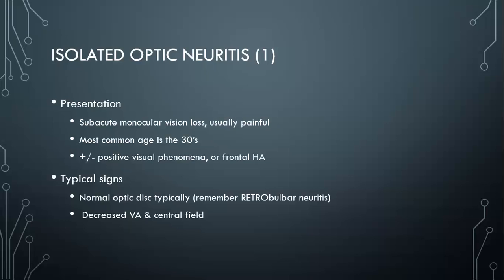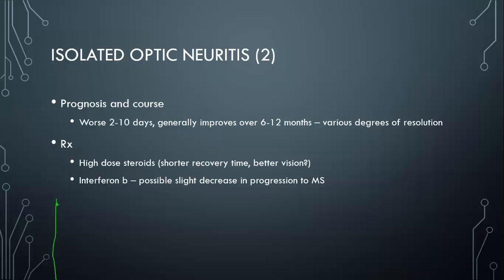When you look at the optic nerve, you don't really see very much because this is a retrobulbar neuritis. On visual acuity and fields, you'll see decreased central field as well as decreased visual acuity. In terms of how optic neuritis generally progresses: vision goes down initially, might get worse over the next couple of days up to two weeks. Then you see slow progressive improvement over six to twelve months, then plateau out.